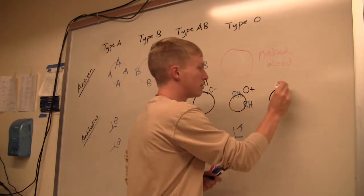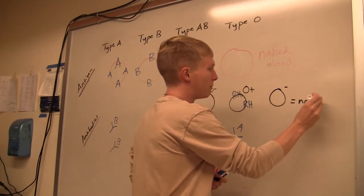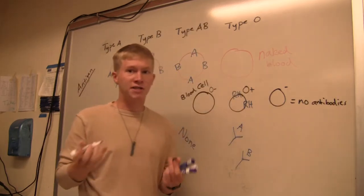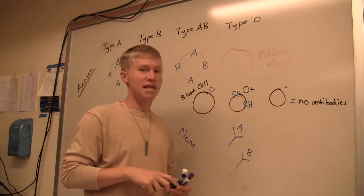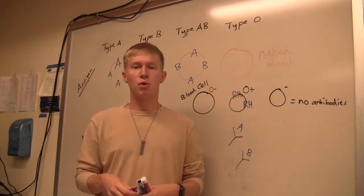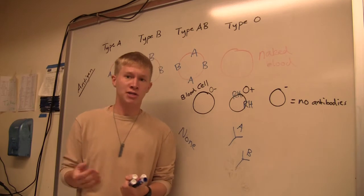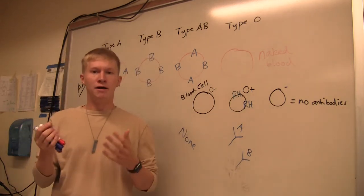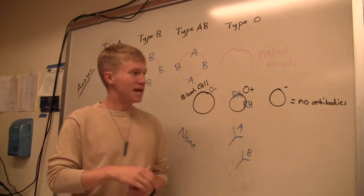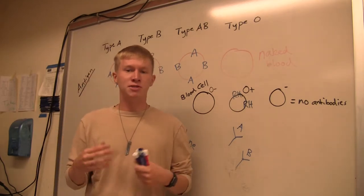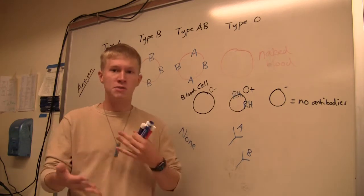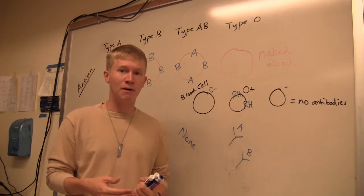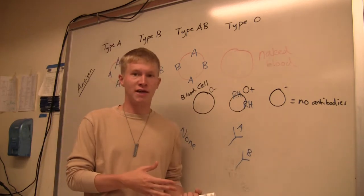O negative blood, for example, has no antibodies unless you have an exposure. One of the most common examples, one that Dr. Hollinger is going to talk a lot about in lecture, is the interactions between a fetus and the mother in the womb. Say a woman gives birth, there's a little bit of hemorrhaging, there's some blood swapping. There could be a potential for antibodies to develop to fight Rh factor in that case.